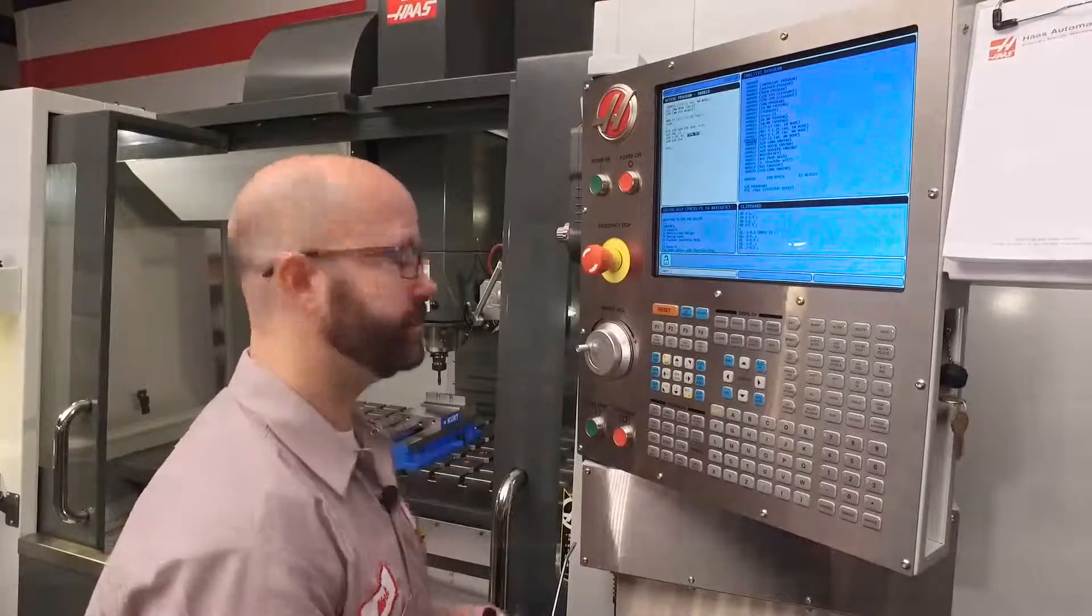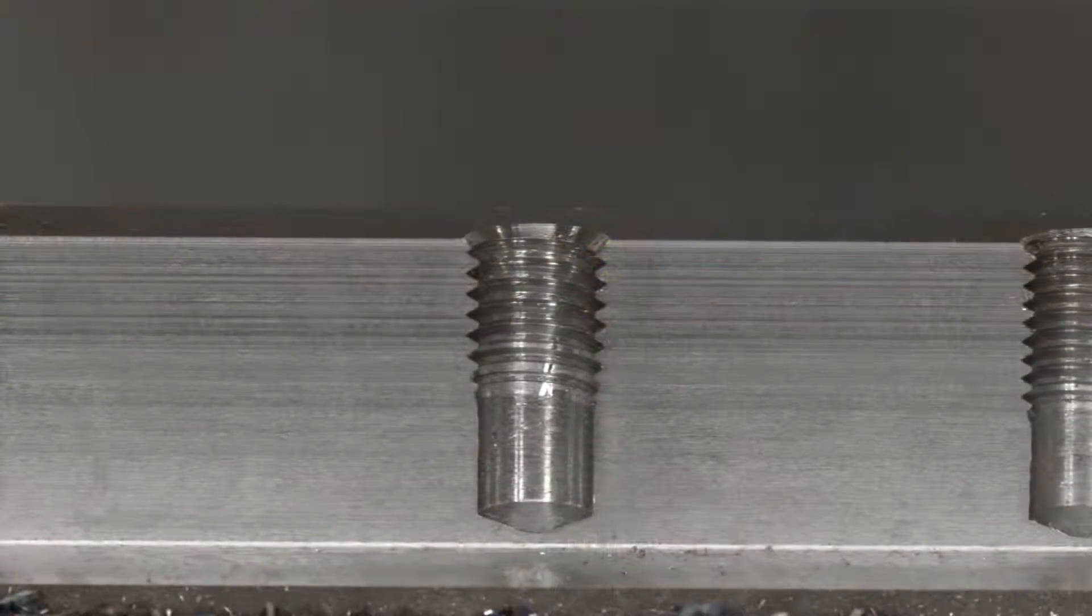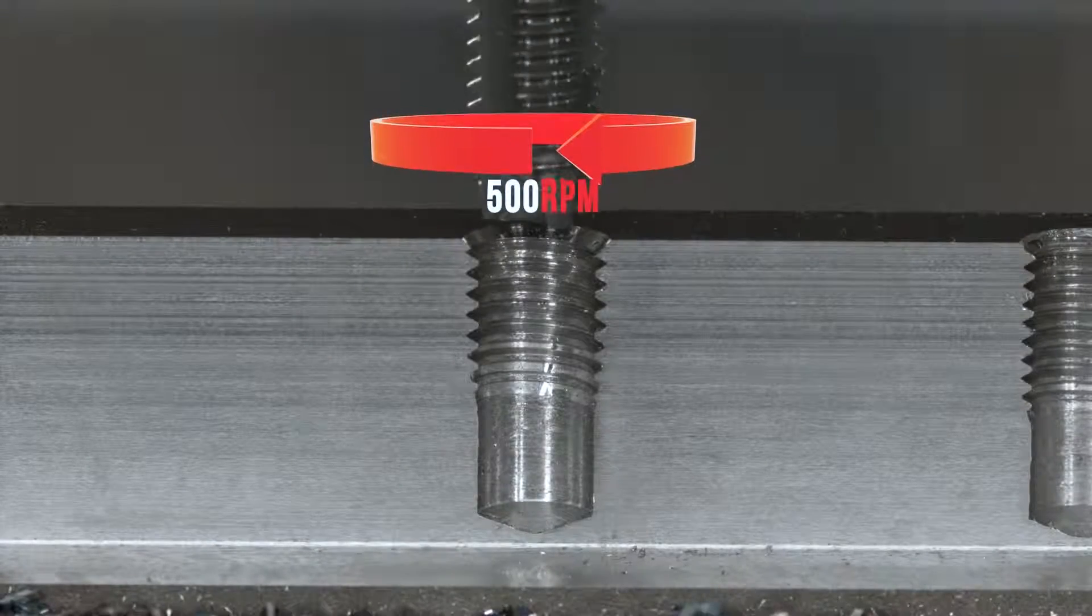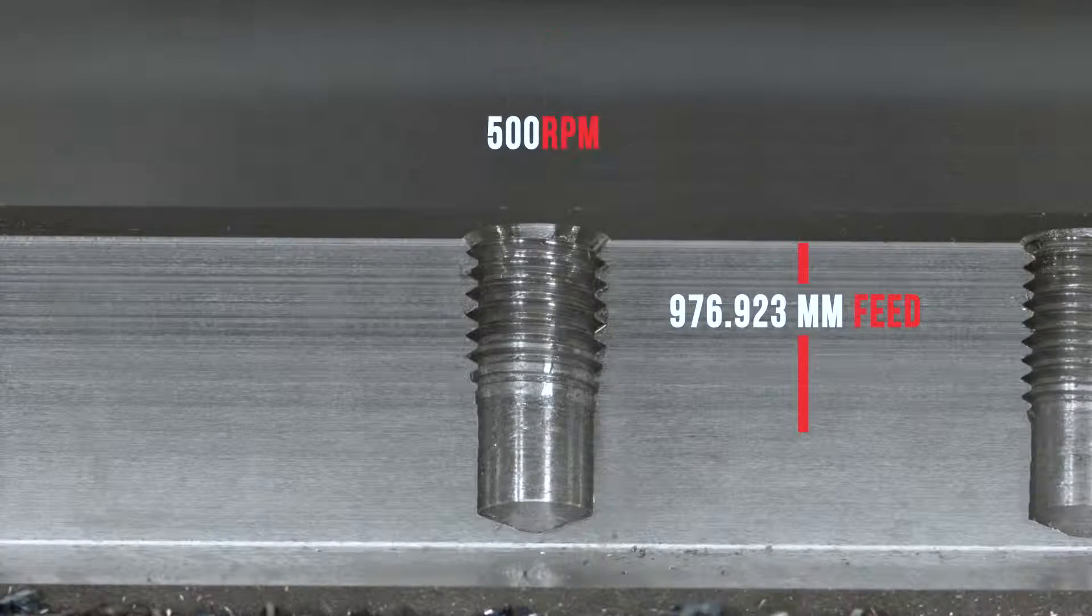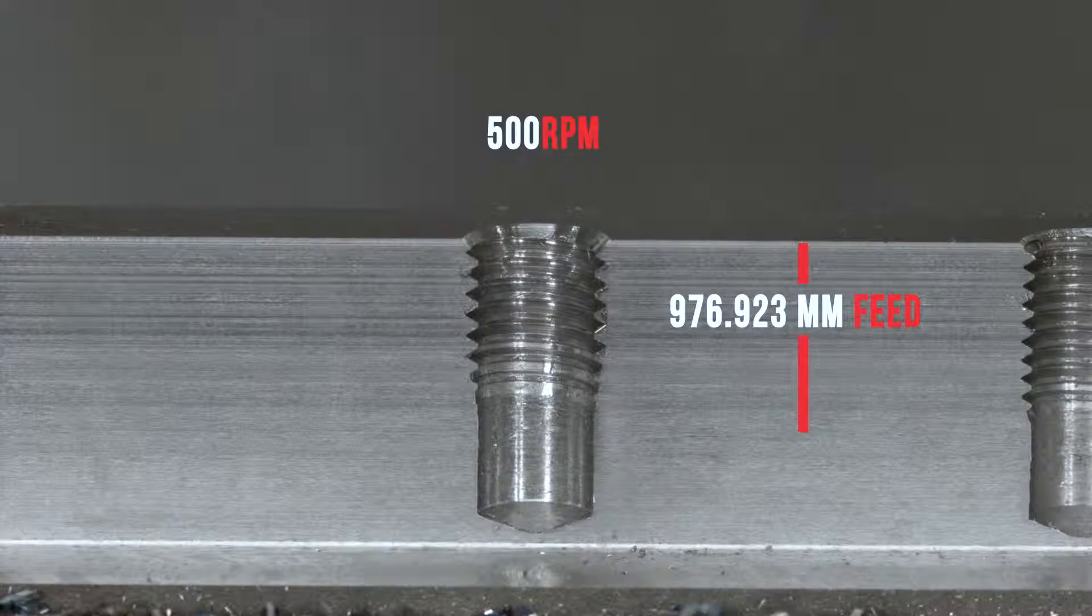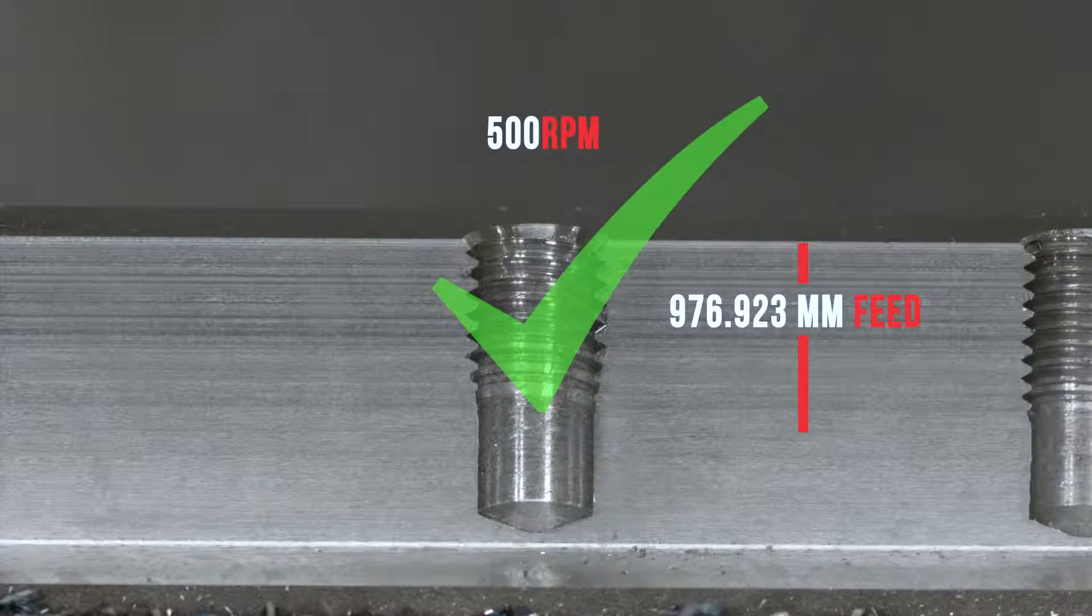Let's go ahead and watch it run. We've got our one half 13 inch tap threading this hole at 500 RPMs and feeding at 976.923 millimeters. That feed rate and the RPM match perfectly to give us our 13 TPI.